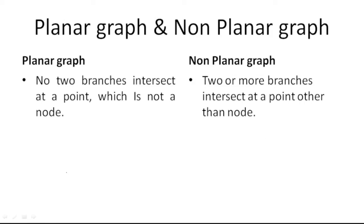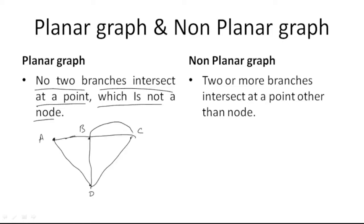Next is the planar graph and non-planar graph. A planar graph is drawn on a two-dimensional plane so that no two branches intersect at a point which is not a node. For example, a graph where there is no intersection between two branches is called a planar graph.